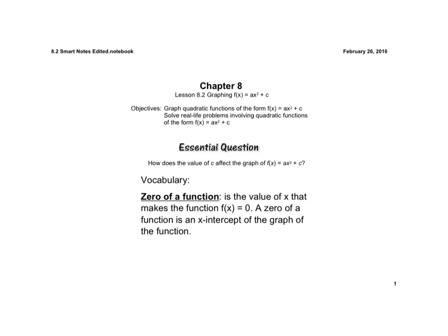So our essential question is, how does the value of C affect the graph? Now, the new vocabulary term for this section is a zero of a function, and the zero of a function is the value of x that makes the function f of x equals zero. So a zero of a function is an x-intercept of the graph of the function. So if we have the coordinate plane here, and we have a parabola, then the zeros would be that point and that point, the points where it crosses the x-axis.